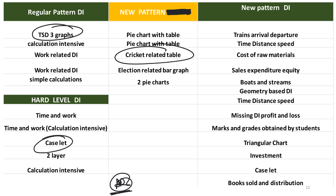Then you talk about cricket-related tables. Basically, what happens is you have been given a pie chart, you have been given a table graph, and then you have been given another graph — this is actually triple. This is something we will be doing at the challenger level, and this is what you will be seeing as far as the new pattern is concerned.